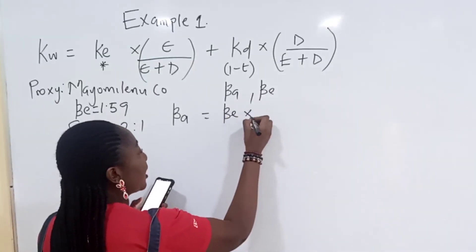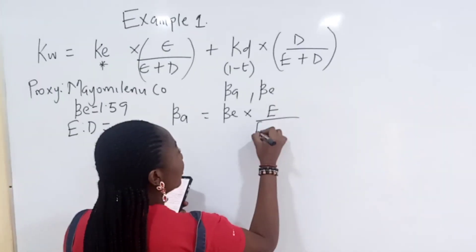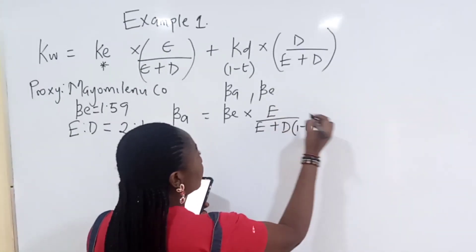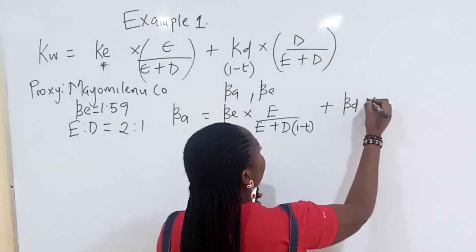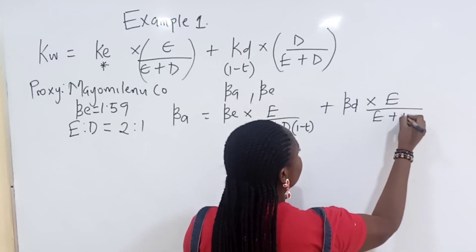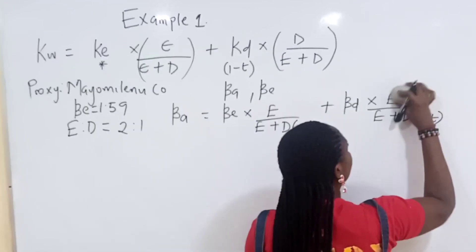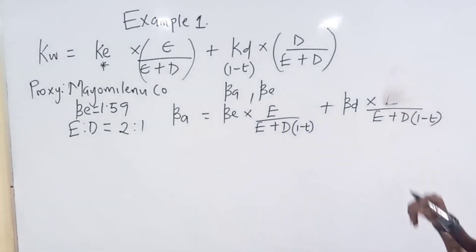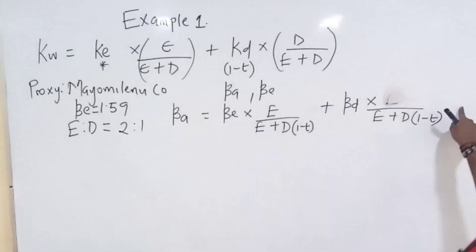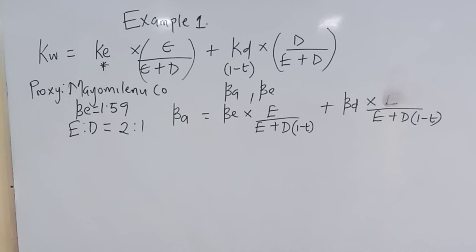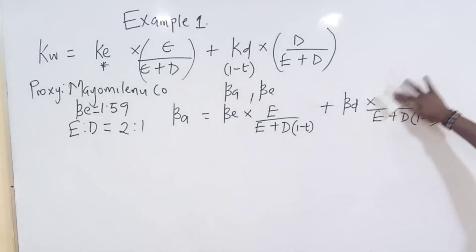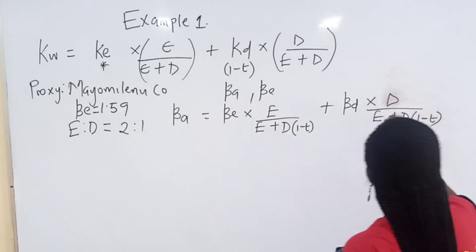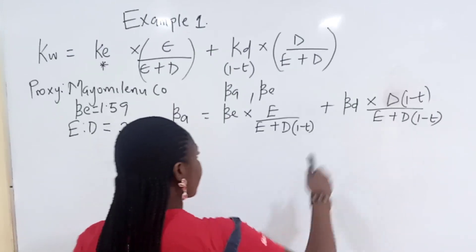So BA equals what? BE times E over E plus D into 1 minus C, plus BD times D over E plus D into 1 minus C. This is not E. This is D. What are you doing? This guy has used something bad to clean his board. He has used, sorry guys. He has used chemical. Serious chemical. That's why this board is doing like this. So this is D into 1 minus C.